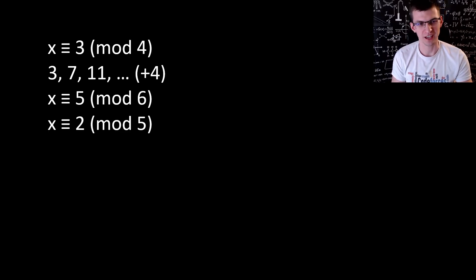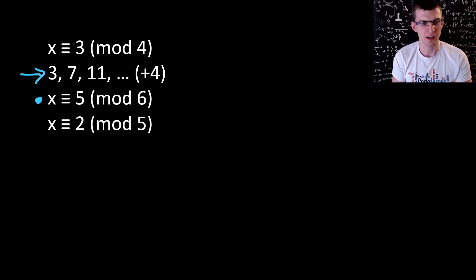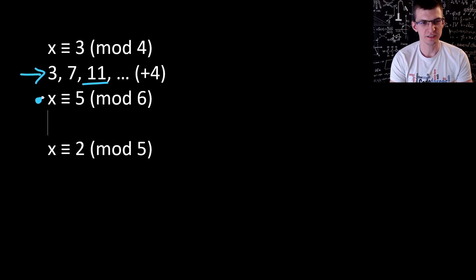The next step is to find in this sequence the first value satisfying the next requirement, 5 modulo 6. 3 doesn't work, 7 modulo 6 is 1, not 5. 11 modulo 6 is equal to 5 indeed. So it is a solution for the first two congruences.